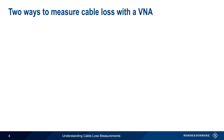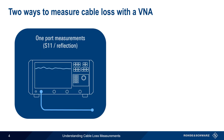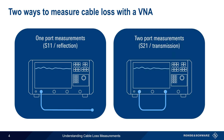There are two ways to measure cable loss with a VNA. The first is a one-port cable measurement, also called an S11 or reflection measurement. Here, only one end of the cable is connected to the VNA. The other method is a two-port measurement, also called an S21 or transmission measurement. In this case, both ends of the cable are connected to the VNA.